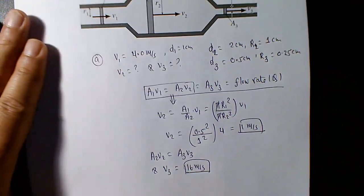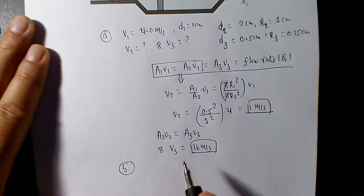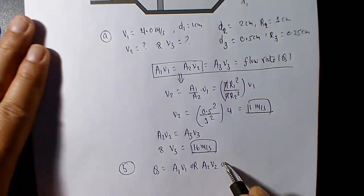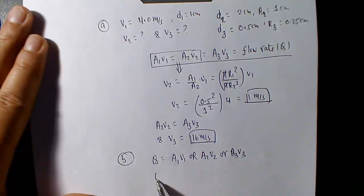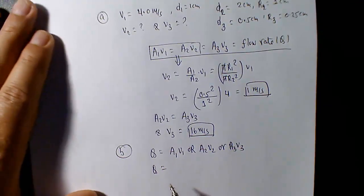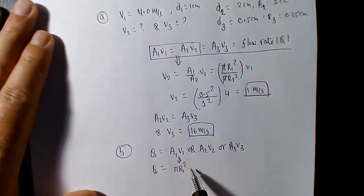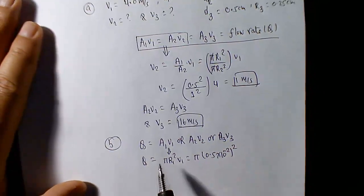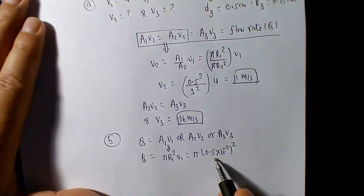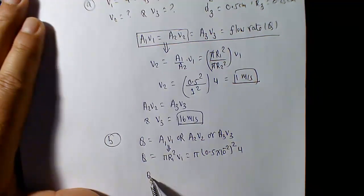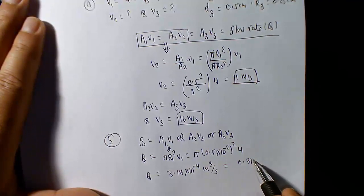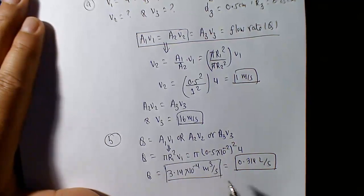Part b asks for the volume flow rate through the pipe. Since volume flow rate is constant, use any section. Using section 1: Q equals pi r1 squared times v1, with r1 converted to meters (0.005 meters) and v1 equals 4 meters per second. The flow rate comes out to approximately 3.14 times 10 to the minus 4 cubic meters per second, or about 0.314 liters per second.